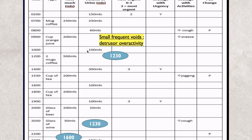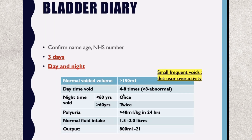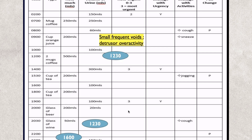Daytime is considered until she is awake — ideally up to about 11 o'clock. For someone under 60, nocturia should be once; over 60, twice is acceptable. Looking at the voided volumes, they are small — around 60 ml — which is below the normal threshold of 150 ml, indicating small frequent voids. Totalling the input gives 1600 ml and output 1230 ml, which is within the normal range.